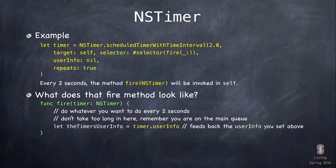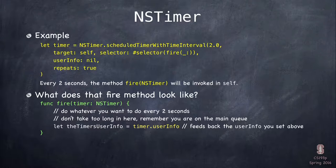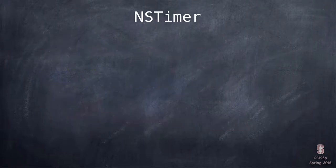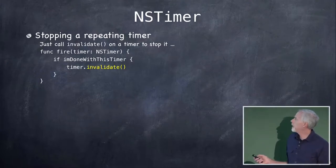Here's an example: firing in two seconds, calling method 'fire' in self. The selector syntax with an underbar-colon means it has an argument. For NSTimer, that argument is always the timer itself. Inside the fire method, you can get the cookie back by accessing the userInfo var on the NSTimer. The timer fires some number of seconds or even minutes later, and you might want that cookie context back at that time.